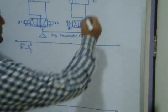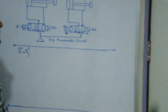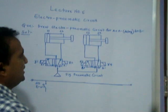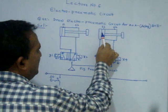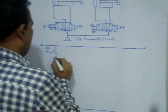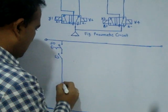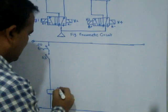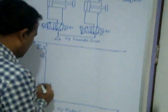Now I'll start. The first sequential action is A plus. For A plus, some reference is required. A plus is nothing but Y1 — you can take directly A plus or Y1. If I take Y1, the reference I take is S3. The last action is B minus, meaning the piston comes to S3. So I'll take S3 as the reference. When S3 is on, Y1 should be on. This is the symbol for the solenoid, and the name of this solenoid is called Y1 or A plus.